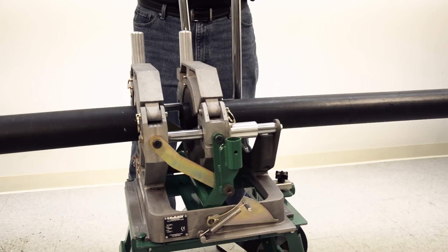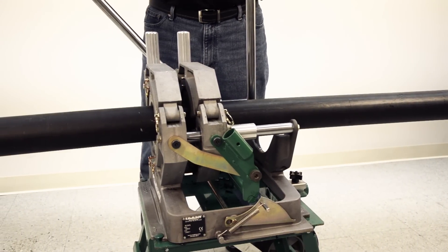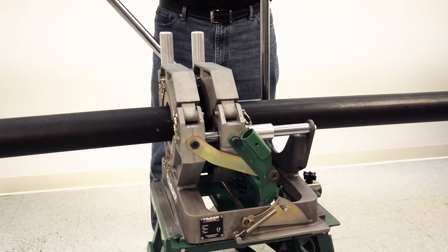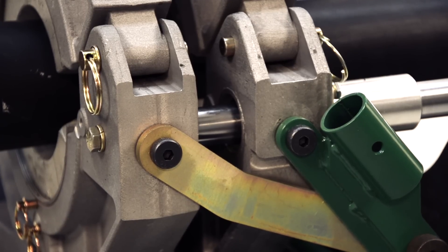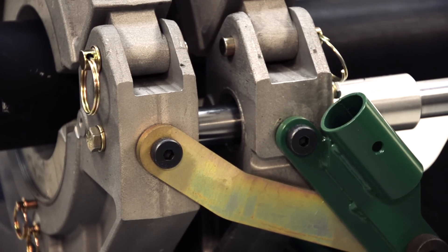If it is, realign using the clamp knobs and reface. Also, bring the pipe ends together to check that they are clamped firmly enough to prevent any slippage of the pipe in the jaws. If the pipe slips, reinstall the pipe with a little more clamping pressure and start the facing process over again.